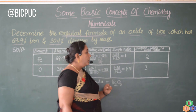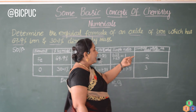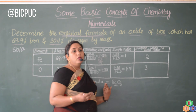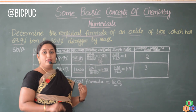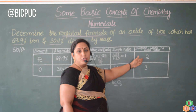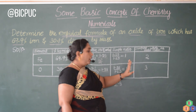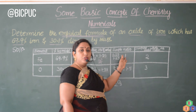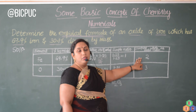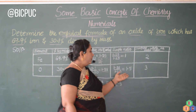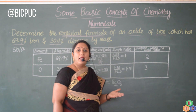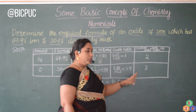Next, we take the simplest whole number moles ratio. The standard conversions are: if the simple ratio is 1, the whole number ratio is 2; if 1.5, it is 3; if 2, it is 4; and if 2.5, it is 5. These standards are already fixed — we just need to apply them.